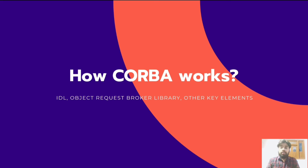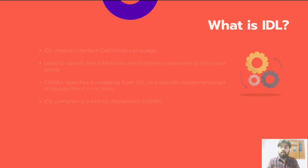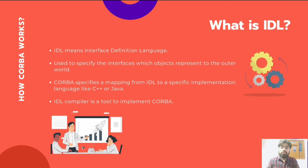Now let's understand how CORBA works, what is IDL, and other key elements of CORBA. IDL is basically a tool used to implement CORBA — it stands for Interface Definition Language. When we said earlier that CORBA is capable of connecting multiple systems based on different operating systems together, it is actually achieved by IDL. IDL is used to specify the interfaces which objects represent to the outer world. Between every two systems we implement IDL, and the communication between those two systems is handled by the IDL. The main role of IDL is to support different types of languages.